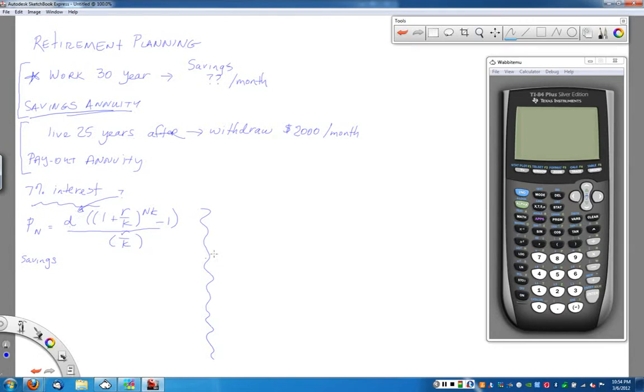At this point, I don't have enough information because I don't know what the amount is in my account at the end. So let's look at the payout annuity part. With the payout annuity, I'm going to use the formula P₀ = D times (1 - (1 + R/K)^(-NK)) divided by R/K.